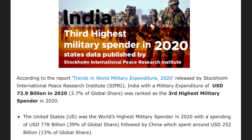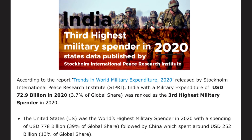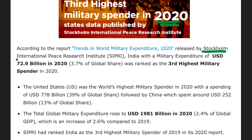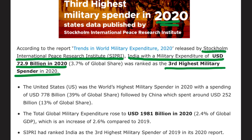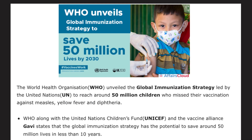India ranked as the third highest military spender in 2020. Data released by SIPRI — Stockholm International Peace Research Institute — stated that India, with a military expenditure of $72.9 billion in 2020, was ranked third. The USA was first, followed by China in second, and India in third.